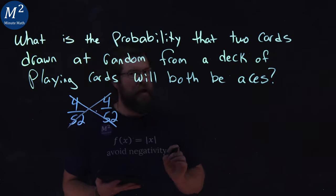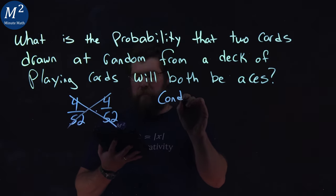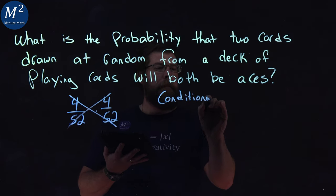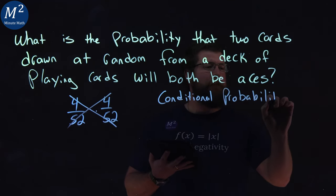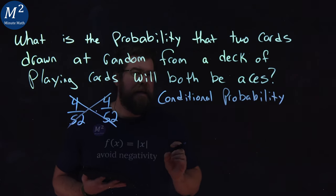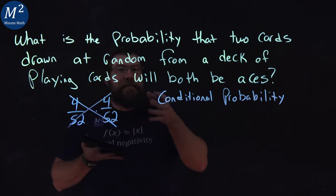But that would be incorrect. This type of probability is what we call conditional probability. Meaning, our first probability affects the second one.